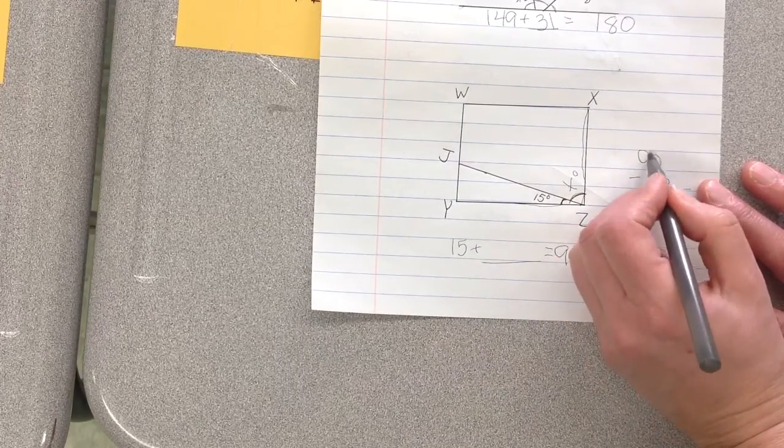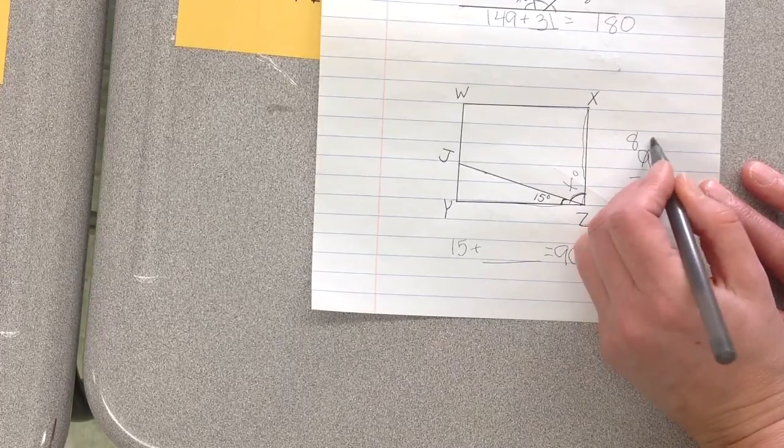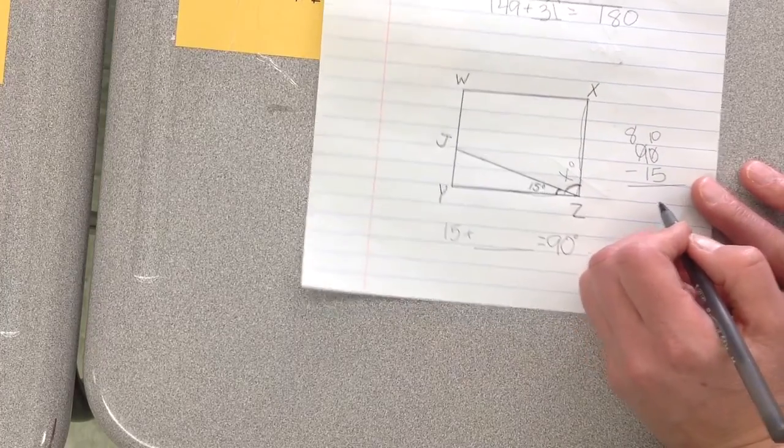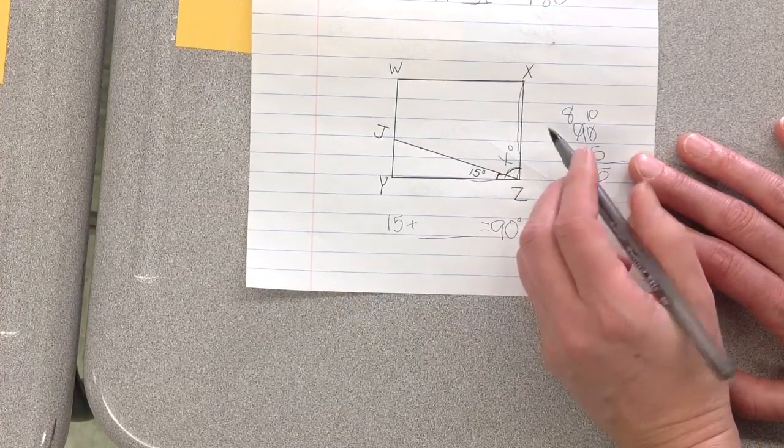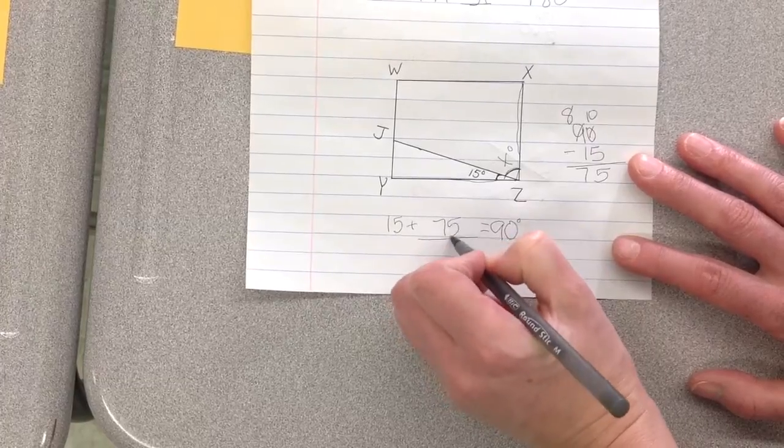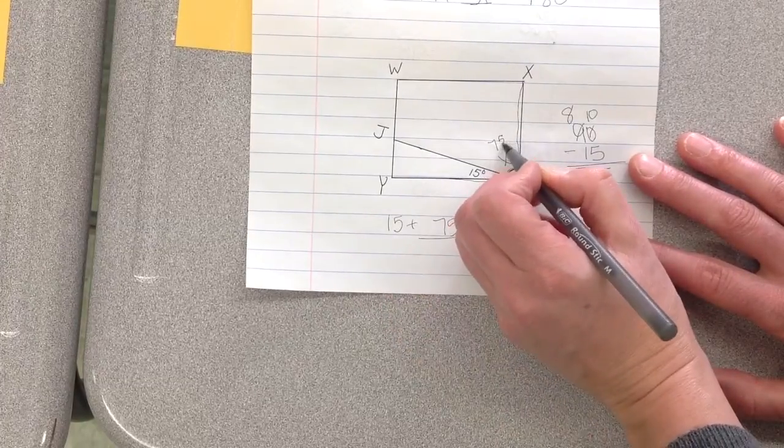Zero minus five, we can't do. We have to borrow. So that becomes an eight. This becomes a ten. Ten minus five is five. Eight minus one is seven. So this angle measure is 75.